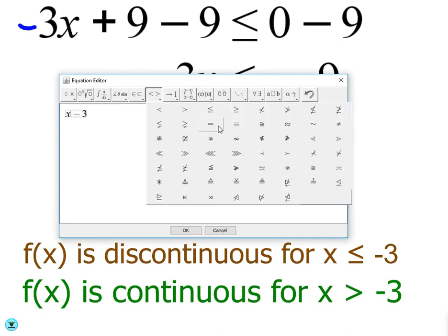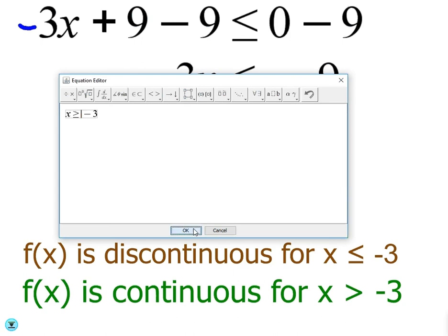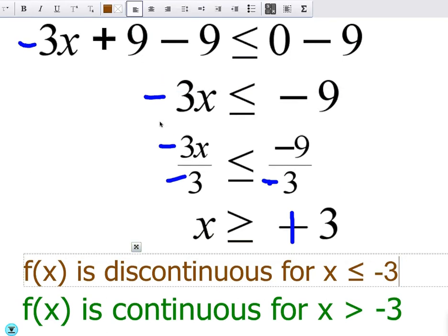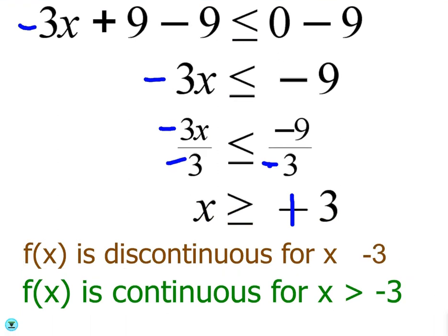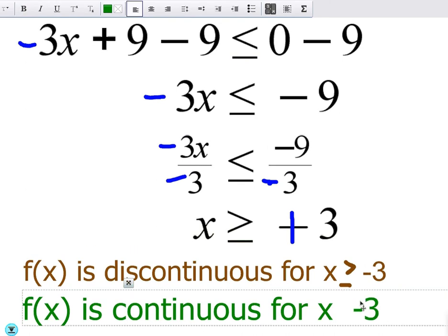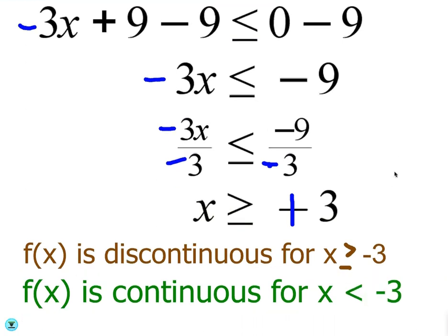So it should be x is greater than or equal to negative 3. It's going to be discontinuous. Now, that means it's going to be continuous for x is less than negative 3. So notice that continuous and discontinuous are just reversed. One side is going to be discontinuous, and on the other side, it's going to be continuous.